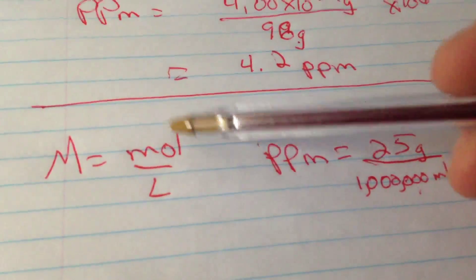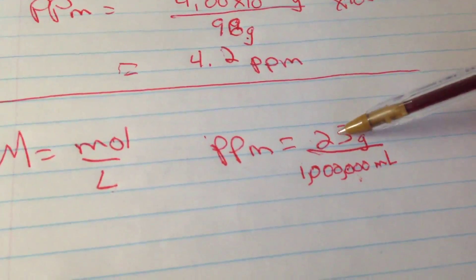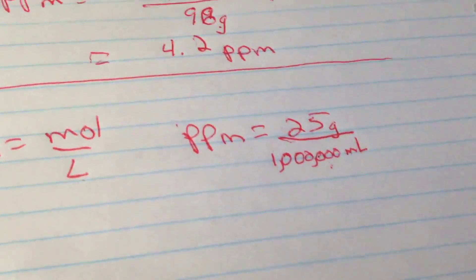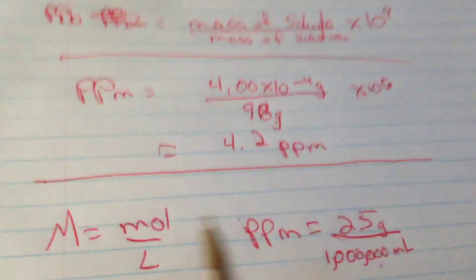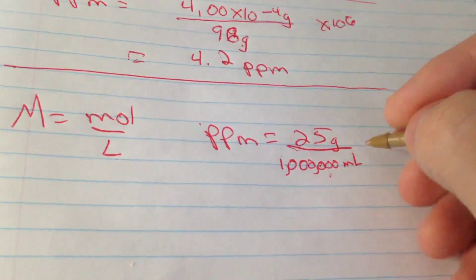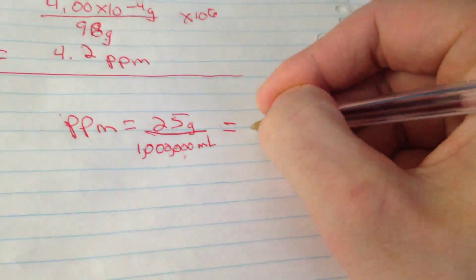And if we look, we wanna get moles over liters. So what we need to do is we need to convert the grams, our mass, into moles, and we need to convert the milliliters into liters. So that's all I'm gonna do here. So to convert milliliters into liters, you divide by a thousand, or you knock off three zeros from the milliliters, and that's just gonna leave you with a thousand liters.